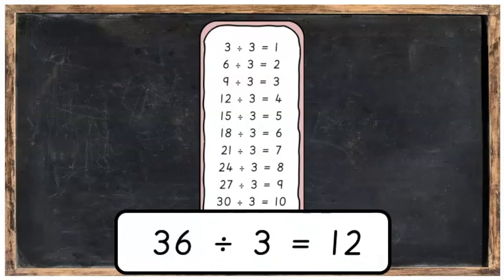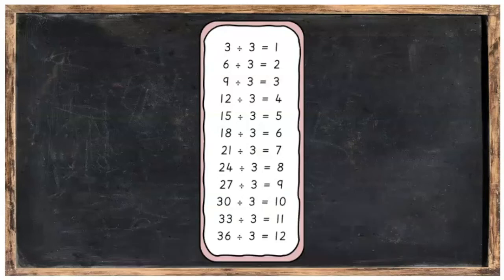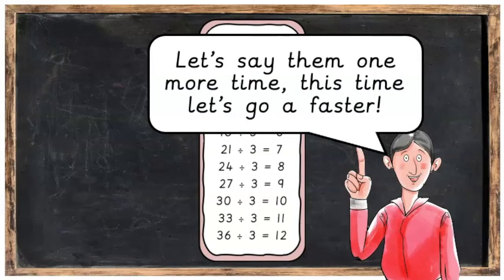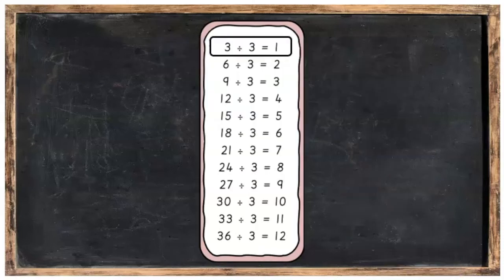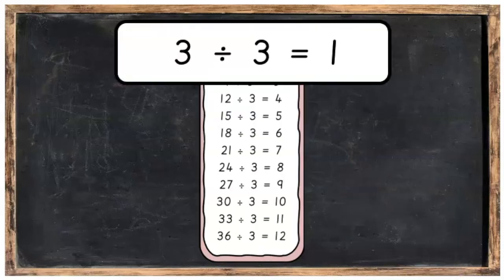And finally, three into thirty-six goes twelve times. And that's it! Let's say them one more time — this time let's go a little bit faster. You can say them at the same time as me. Three into three goes once.